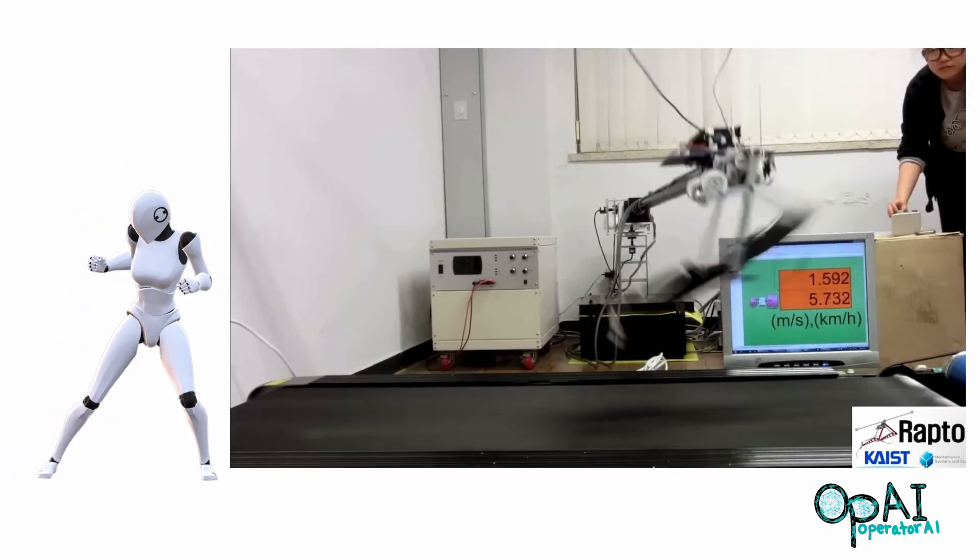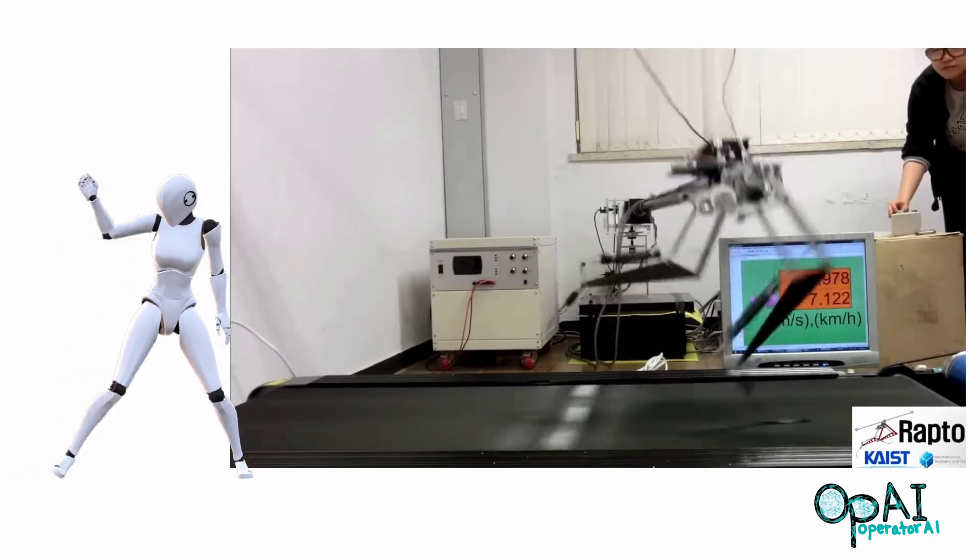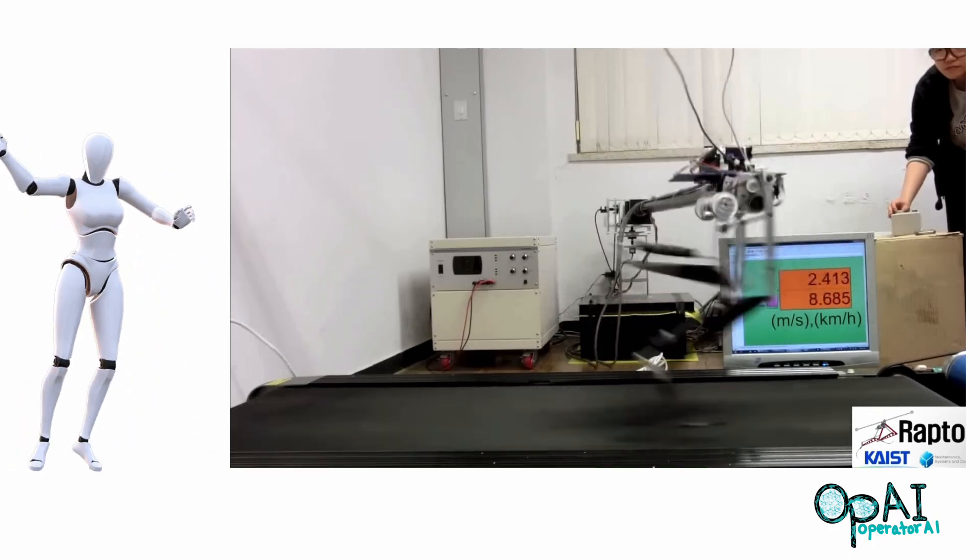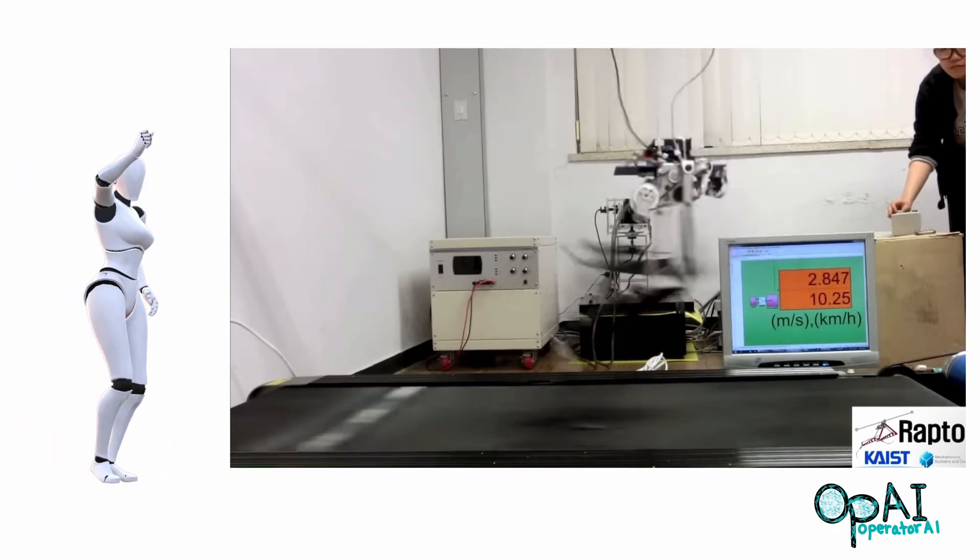Whatever you all do, please don't give that robot right there an upper body. No robot should have the ability to run that fast. 28 miles per hour.